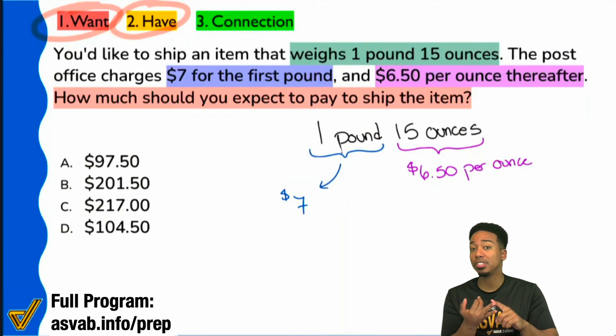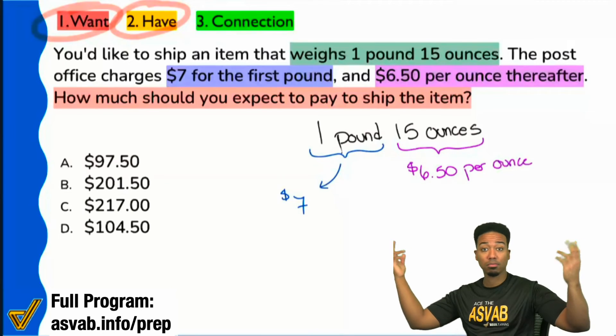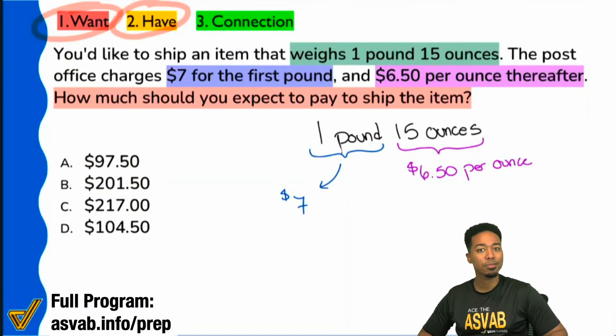In this case, no unit conversion necessary. You have one pound, 15 ounces. And so, therefore, well, first pound, seven bucks, no work needed. Then the rest, $6.50 per ounce. So, everybody, what operation are we going to do with $6.50 per ounce and the 15 ounces? What are we supposed to do? Right. We're supposed to multiply.